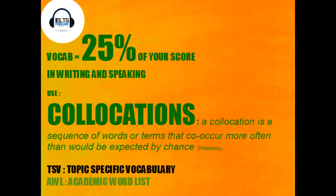So you probably know that vocabulary represents 25% of your score for both the writing and the speaking. And if we want to get band seven, band eight, it's strongly recommended you use collocations. Can you think of any collocations? Do you know what one is? Well, a collocation from Wikipedia is a sequence of words or terms that co-occur more often than would be expected by chance. So maybe unemployment benefits, noise pollution — those are examples of collocations.